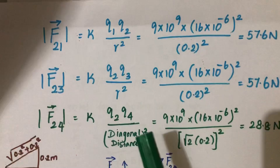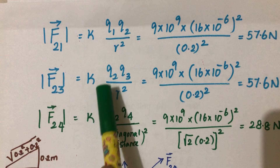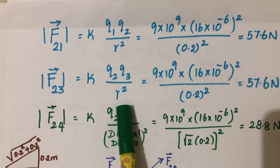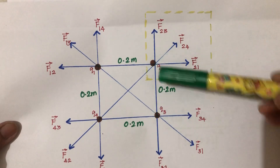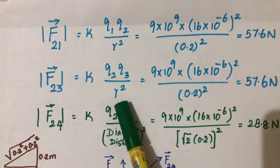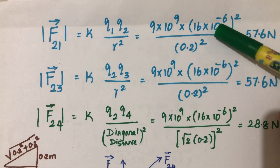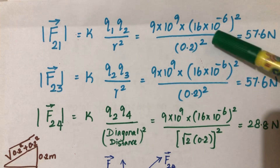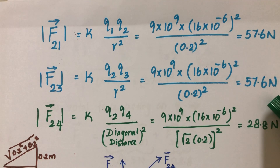Now let's calculate F23, the force on q2 due to q3. F23 = k·q2·q3 / r². q2 and q3 are also separated by 0.2 m, so r = 0.2 m again, and everything else is the same. Since these two calculations are identical, you get the same value: 57.6 newtons.